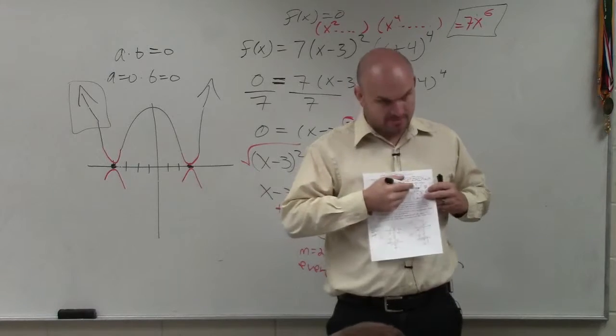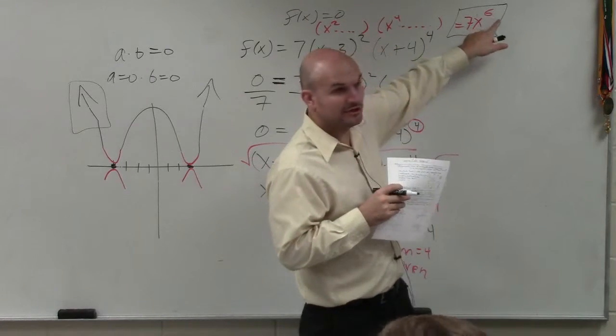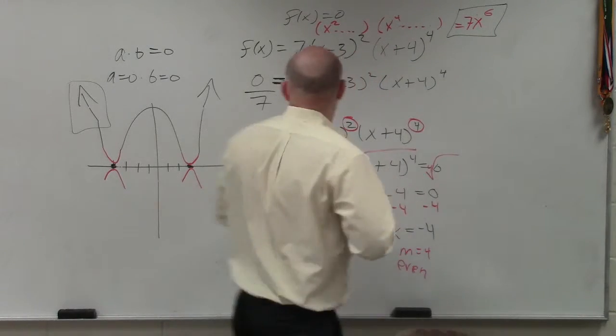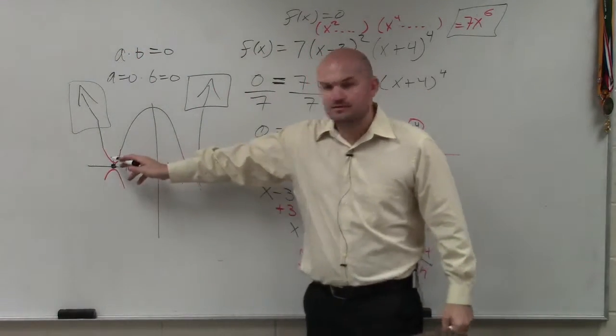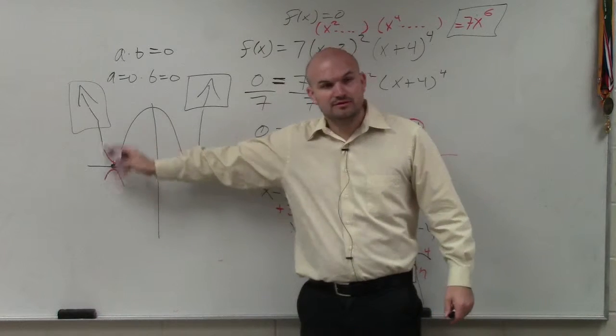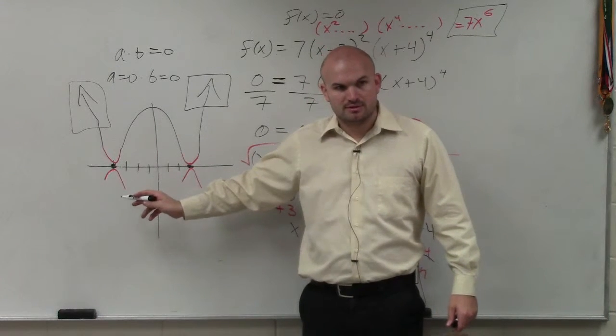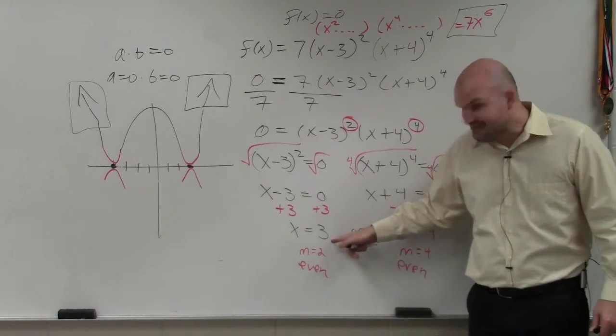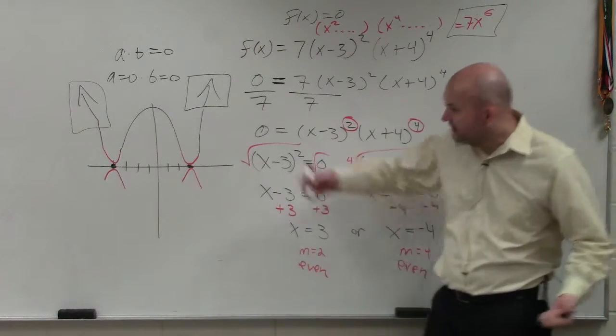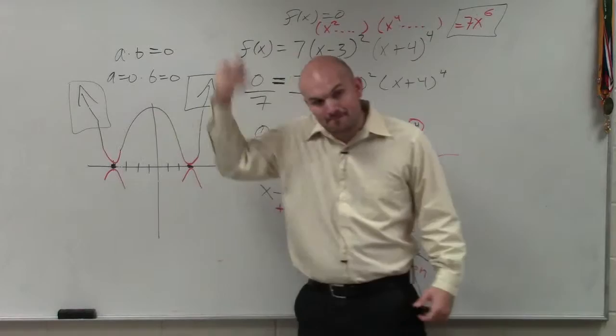End behavior, right here. Even degree, positive leading coefficient. The arrows look like this. Okay. Then, do you know why I'm either going the u up or the u down? No. Because the multiplicity is even. If it's even, where it's a zero, it bounces.